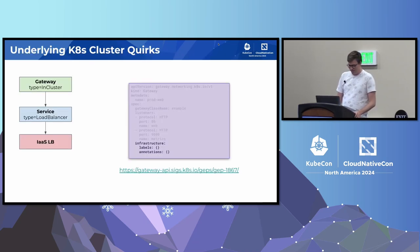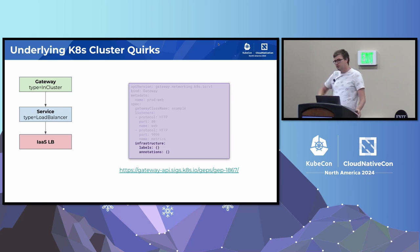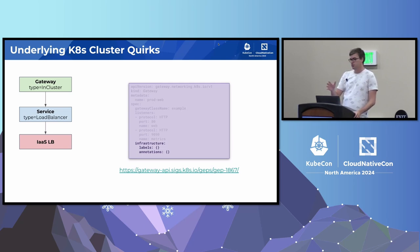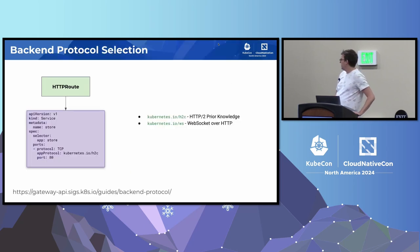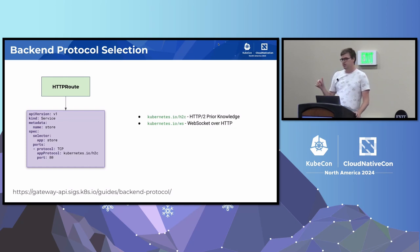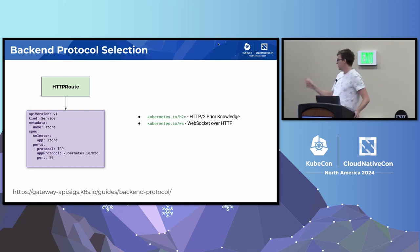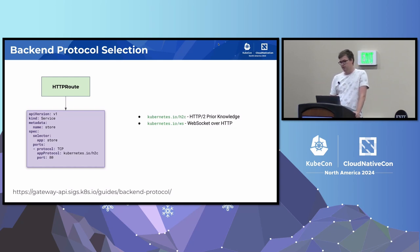How do you work around these quirks? Google support will say to use a specific type of load balancer. For the Gateway API, there's an infrastructure stanza where you can add labels and annotations that should propagate down to the actual service the gateway creates. On a separate topic: your HTTPRoute can point to backends supporting different protocols. gRPC is technically HTTP/2, so in theory you can route an HTTPRoute to a gRPC workload if it's HTTP prior knowledge. On the service you set the app protocol field. I've added conformance tests for WebSockets and HTTP prior knowledge.